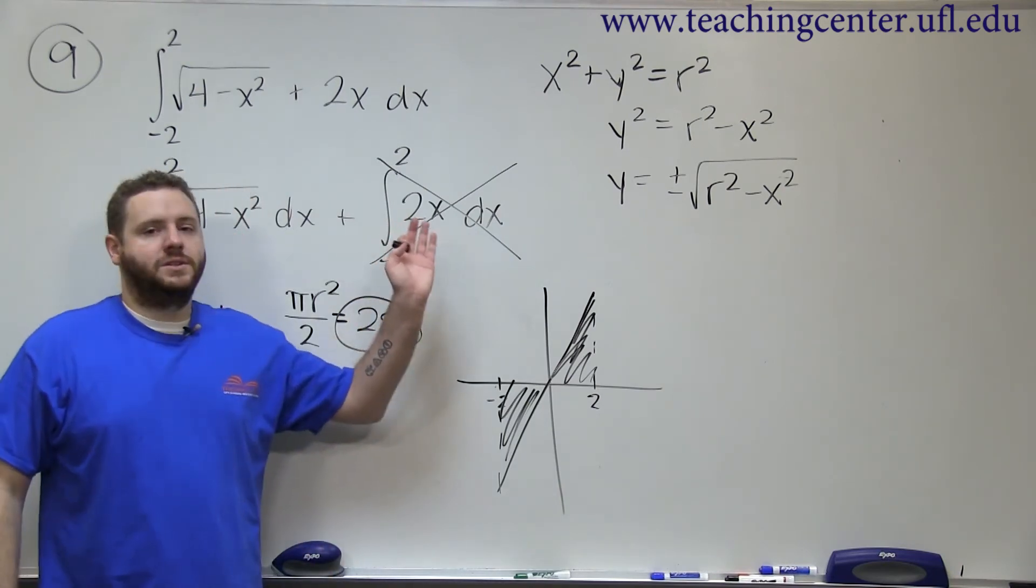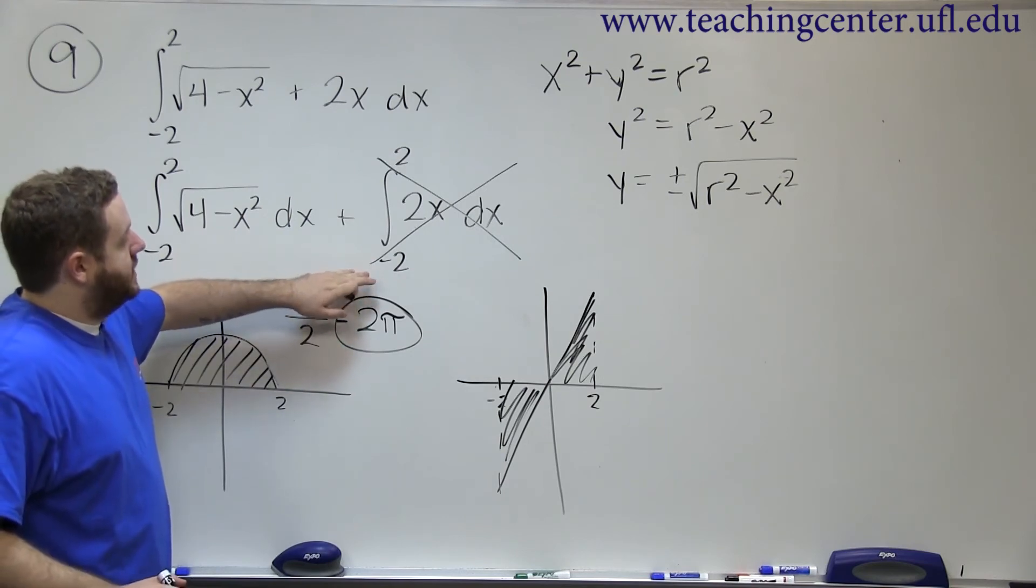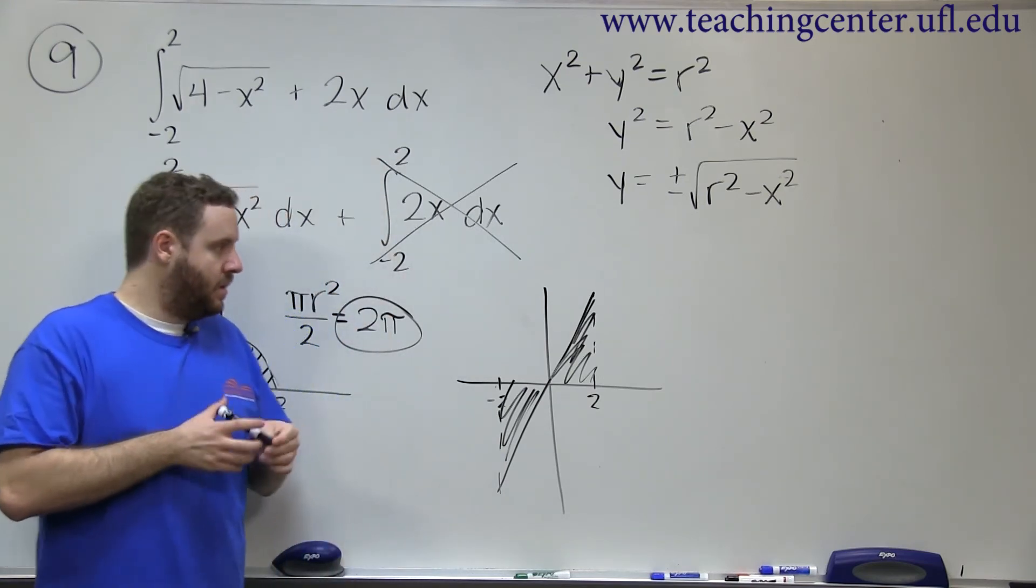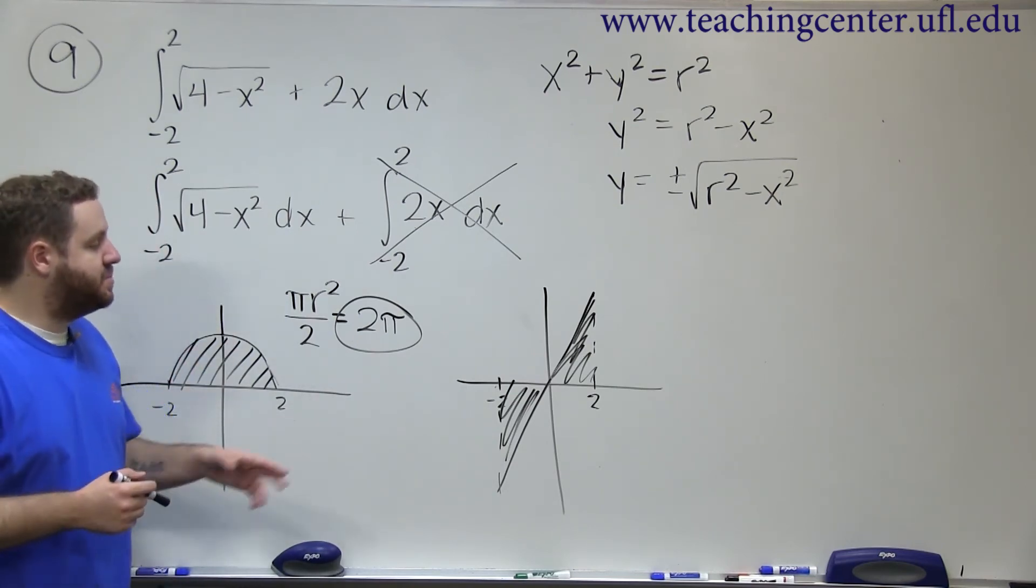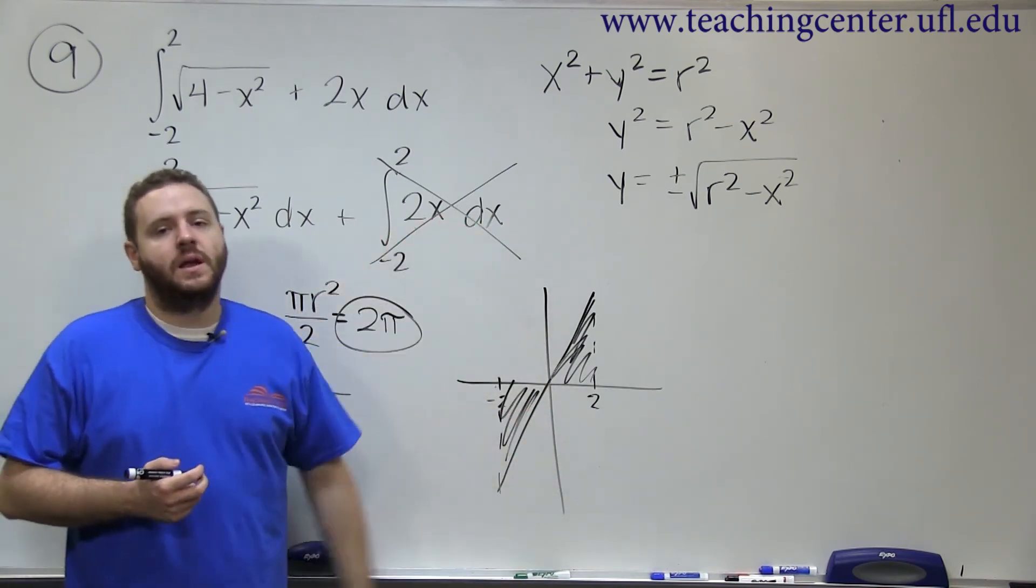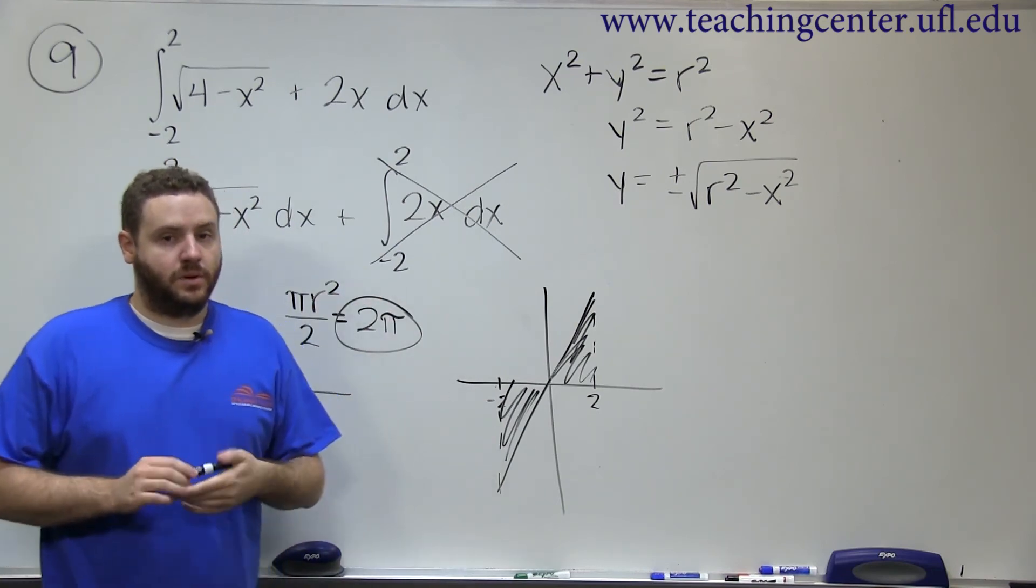So any time you have an odd function and your integral is symmetric, like it goes from negative a to a, whatever a might be, that integral has to be 0. And it's pretty simple to show that by graphing it. So even if you had a complicated function here, as long as you knew it was odd, you wouldn't really have to do any other work.